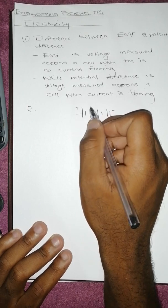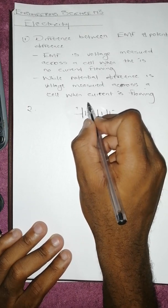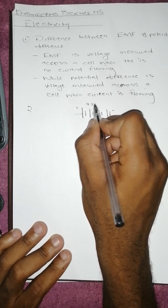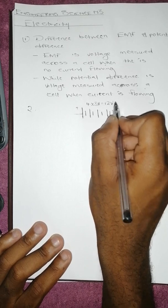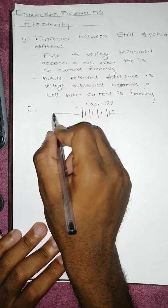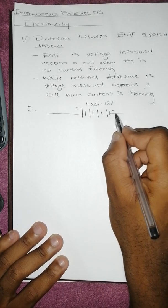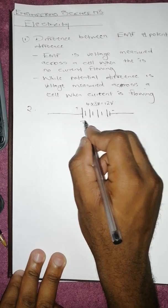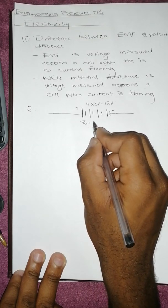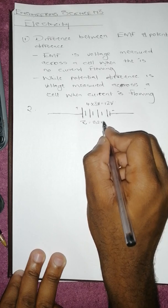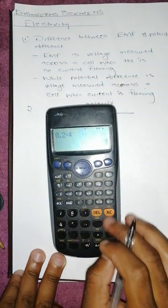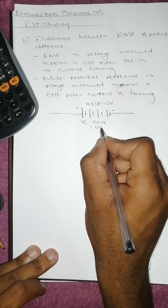We are told that each cell has an EMF of 3 volts, and we have four of those, so it's going to be 4 times 3 volts equals 12 volts. Then the internal resistance Ri equals 0.2 times 4, which gives us 0.8 ohms.